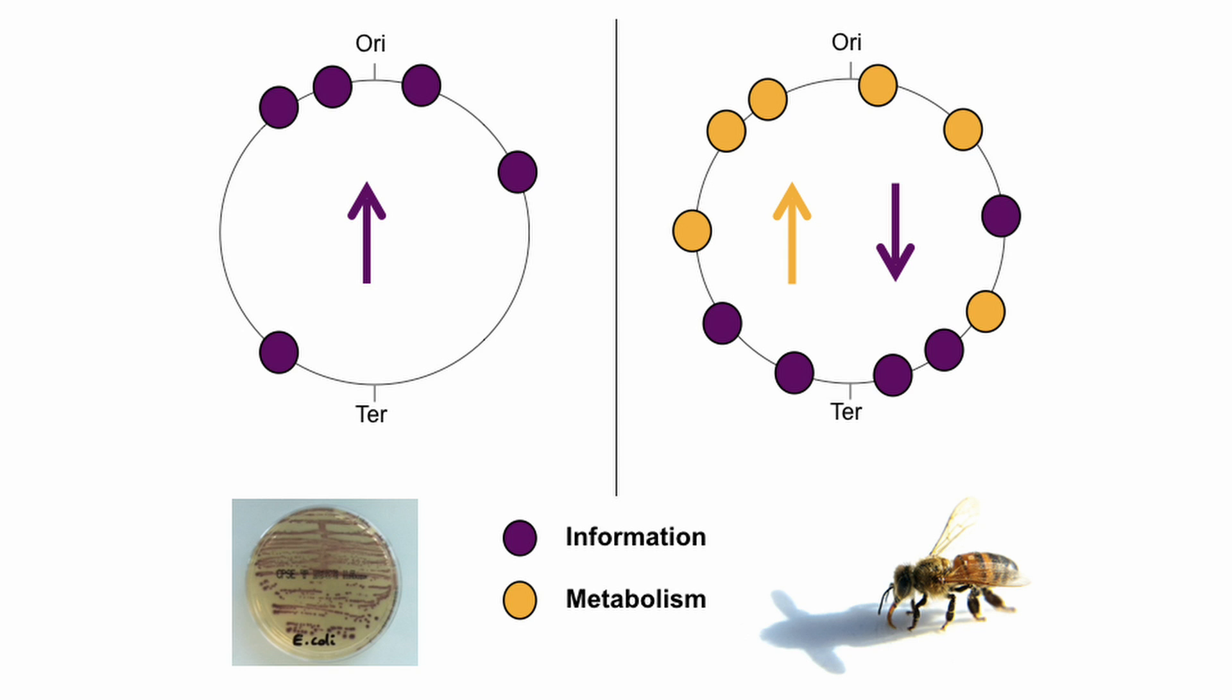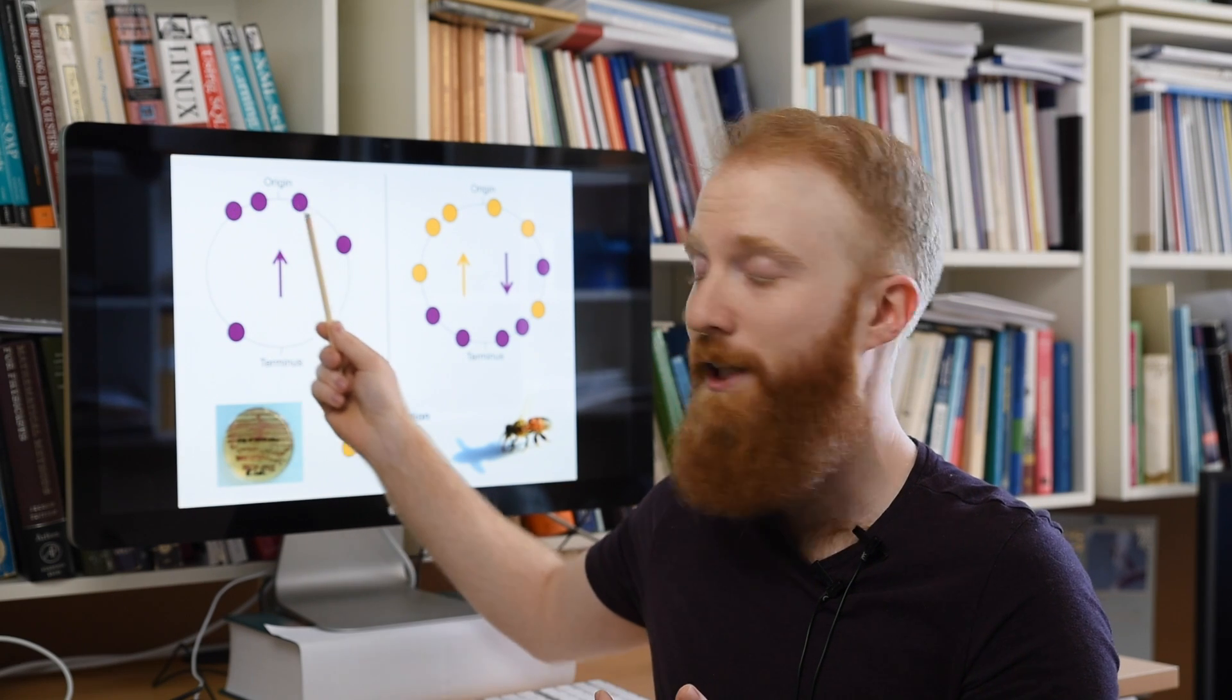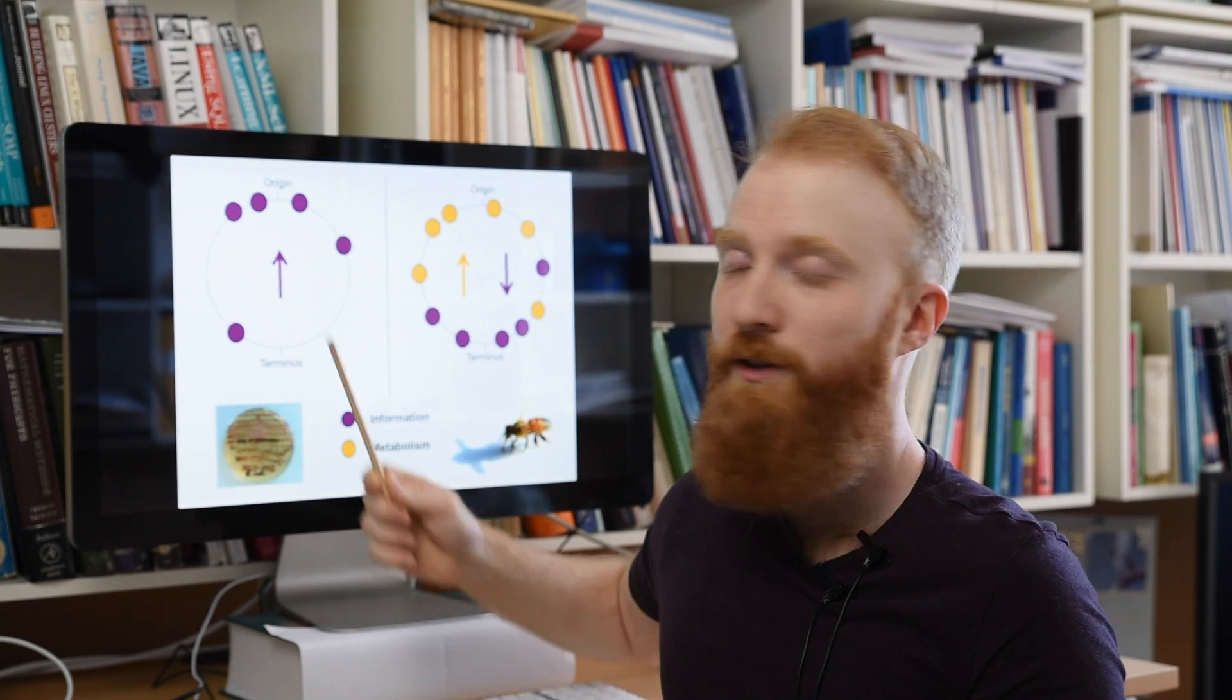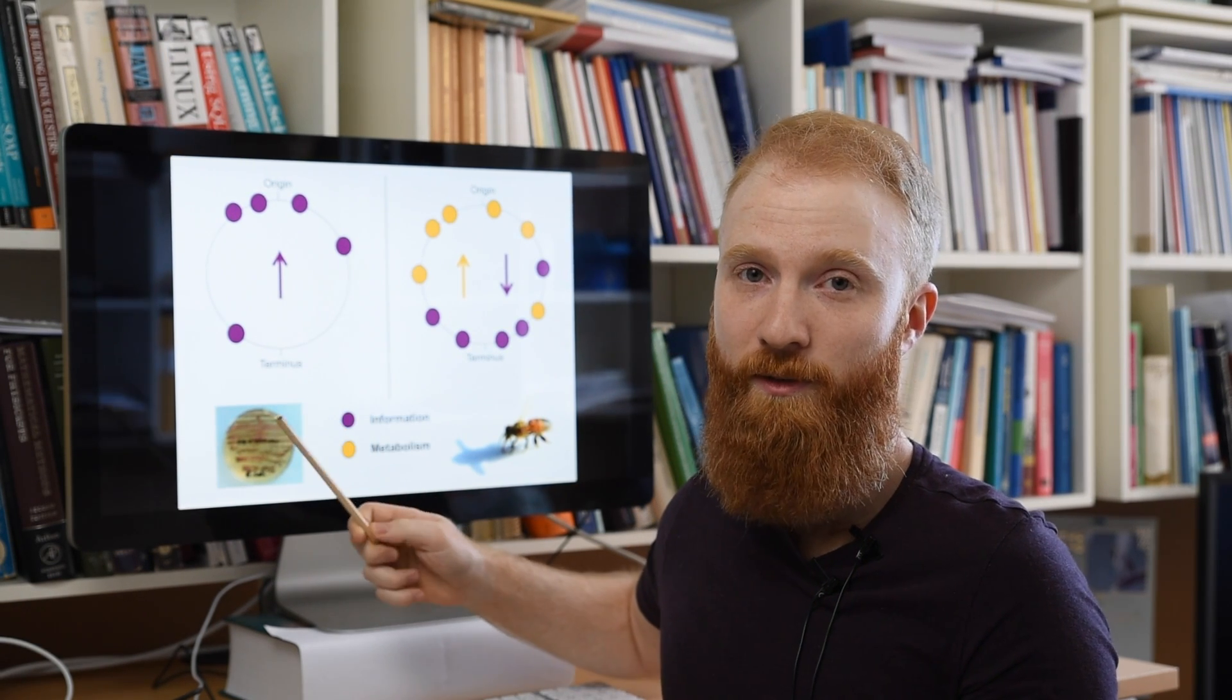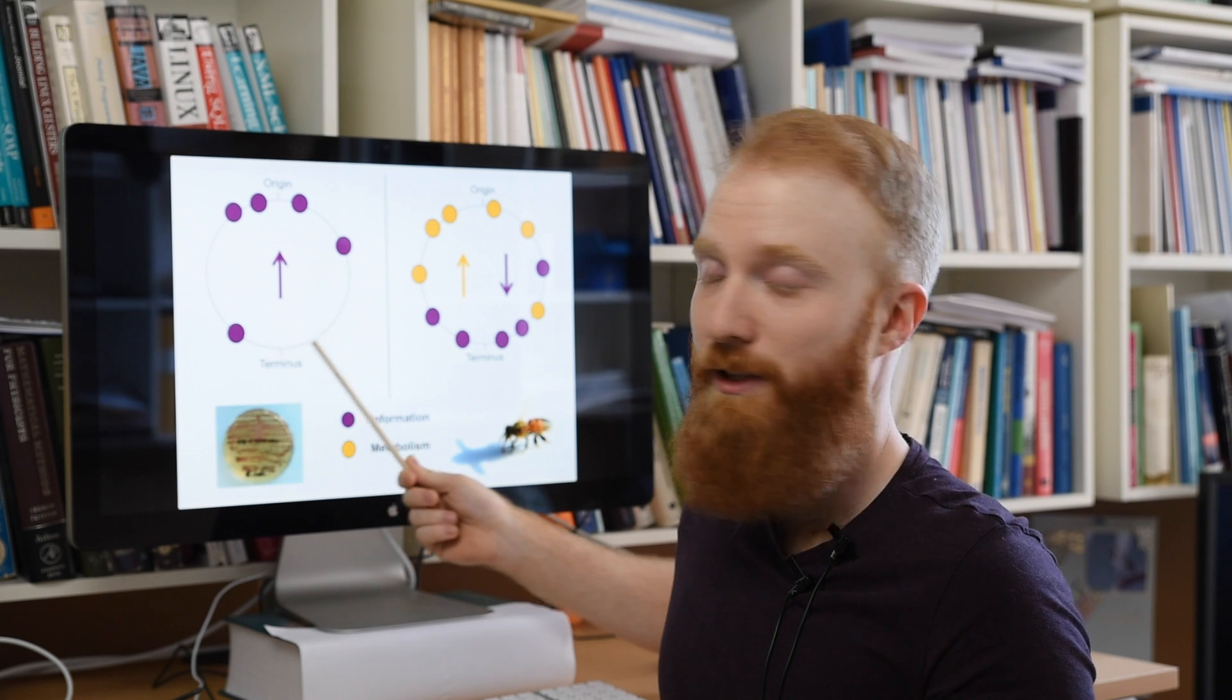Like for example, for a while researchers have known that bacteria that grow really fast, like E. coli, they tend to have several replication forks running at the same time, and this generates extra copies of the DNA at the origin of replication, here at the top of the circles, as compared to the DNA at the terminus of replication, here at the bottom of the circles.